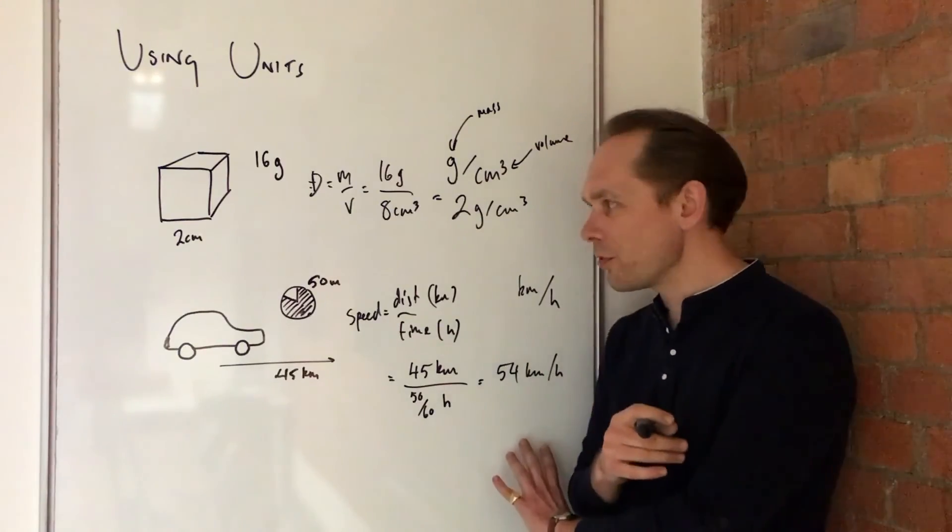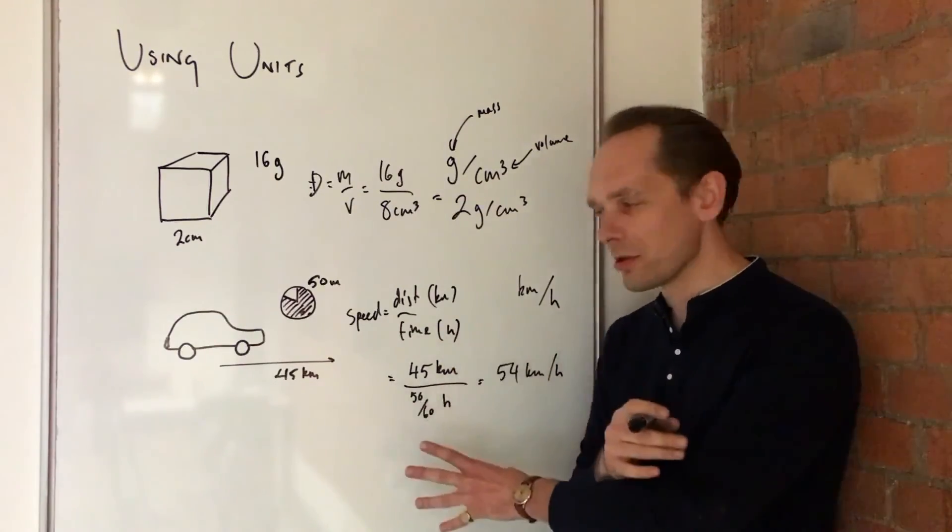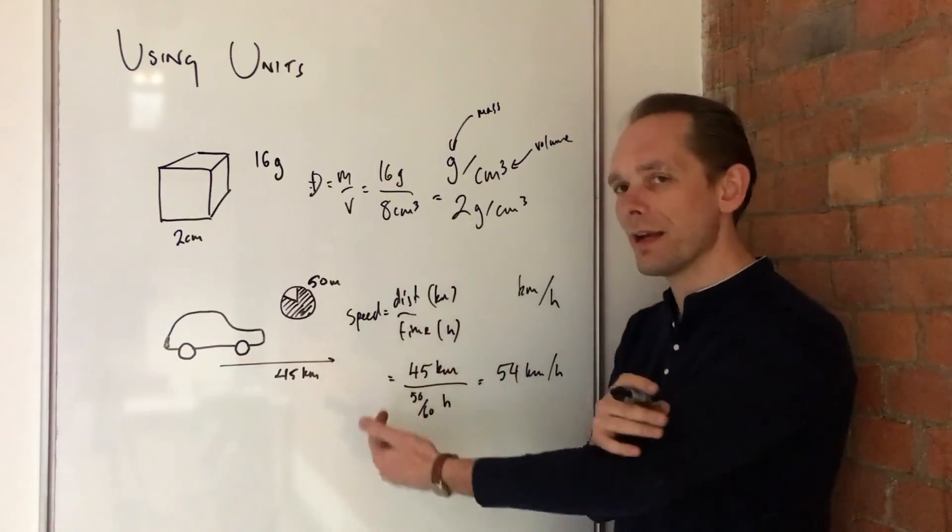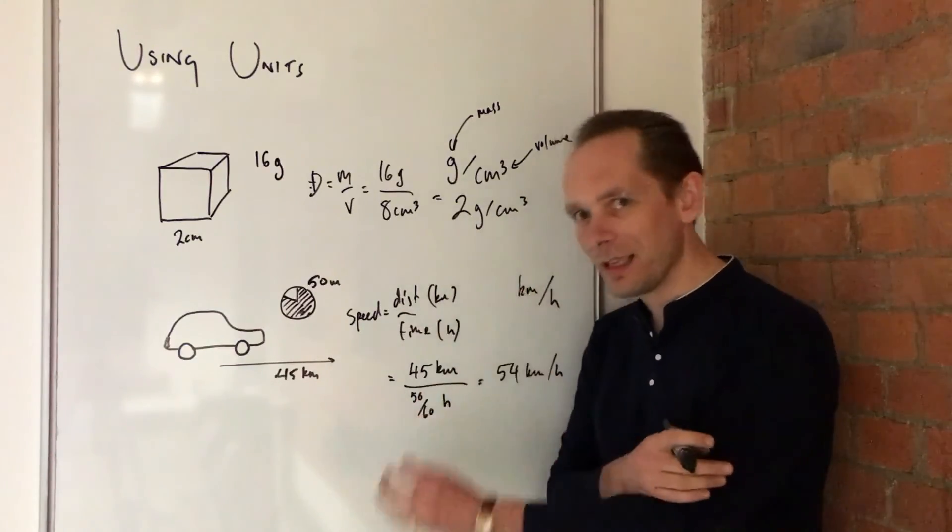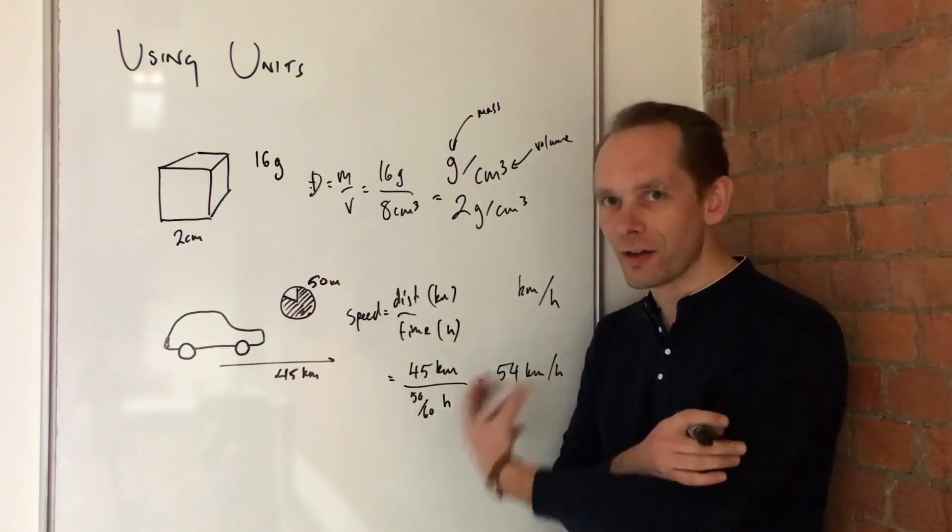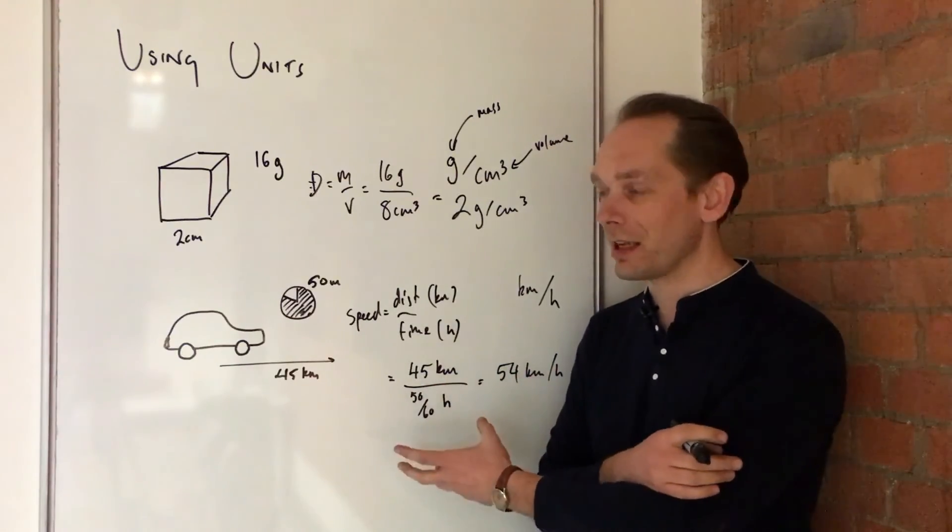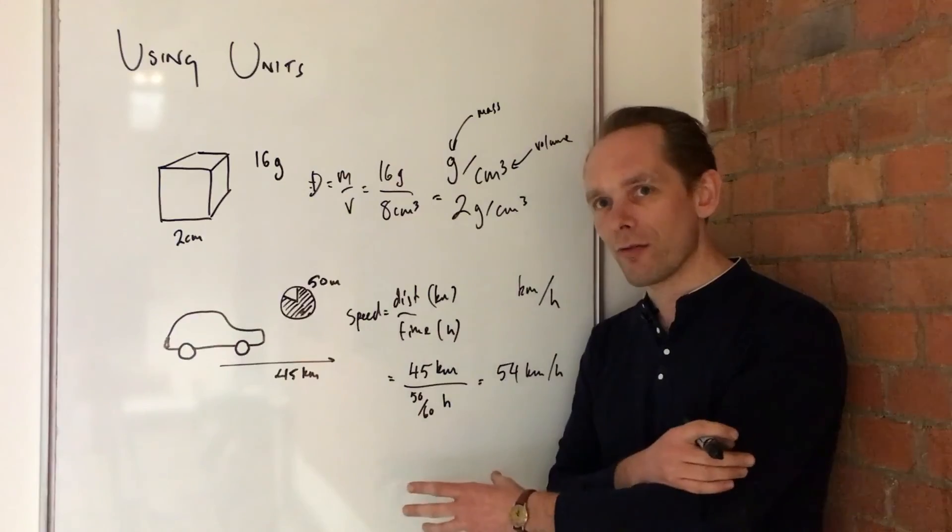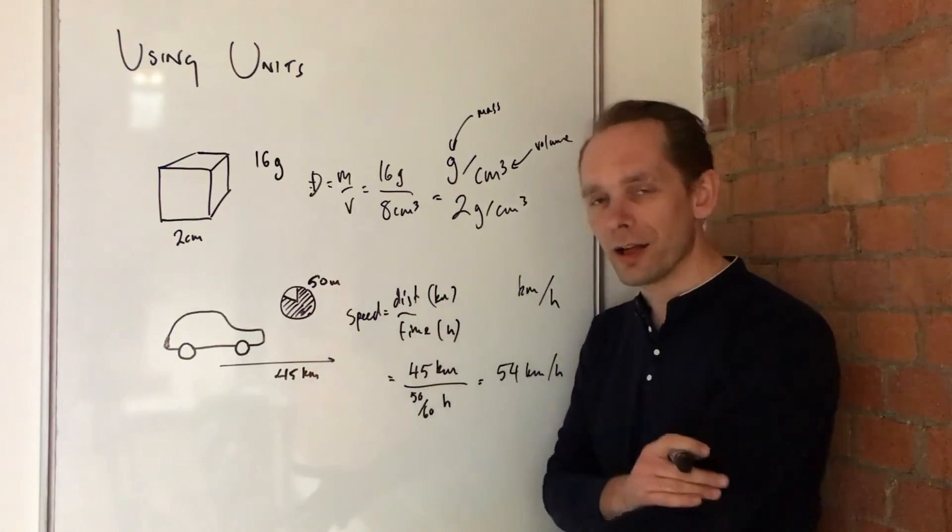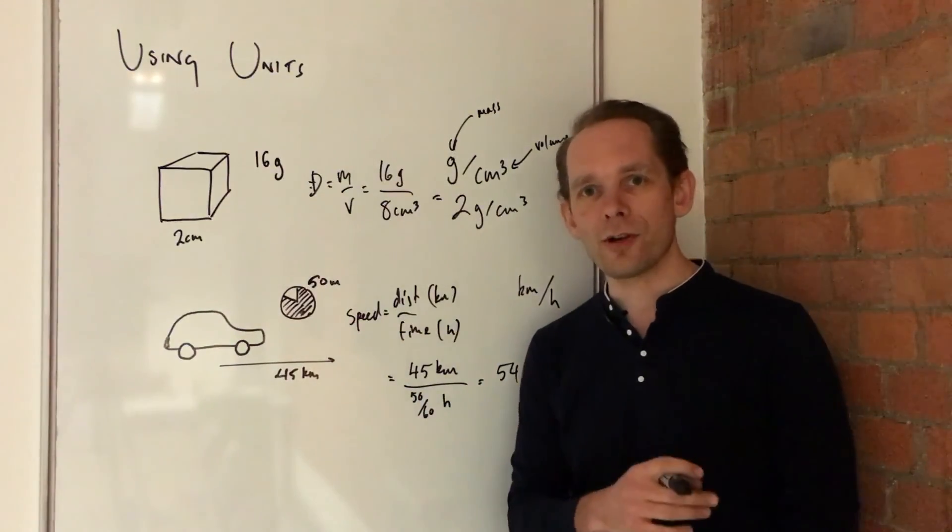Now, the answer is not important. The answer is never important. The method is what counts. Using your units to tell you the method for the sum is the key, I think, to so much in maths and so much in physics and chemistry too. So I hope that was helpful. Please use this idea in other problems, not just the question that follows. Thanks very much for watching.